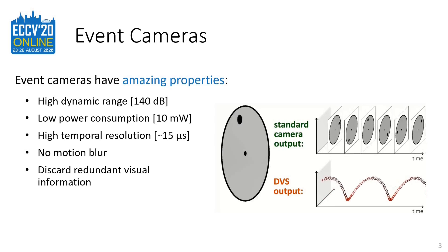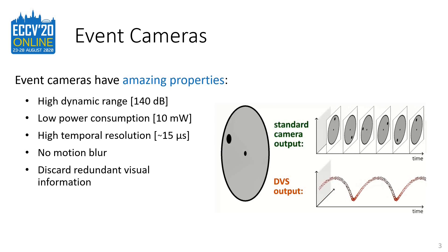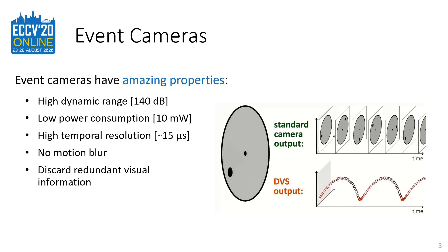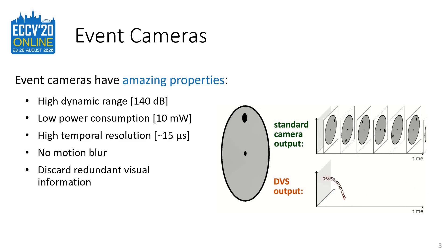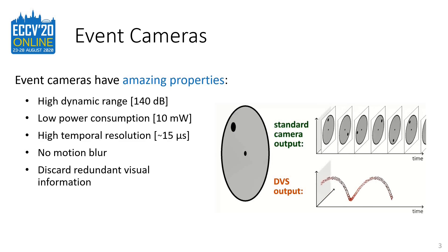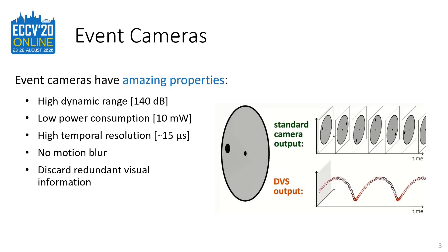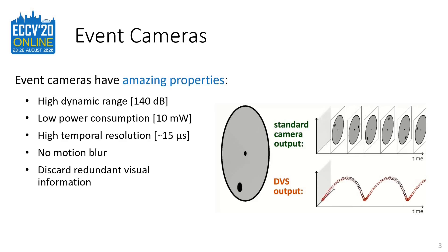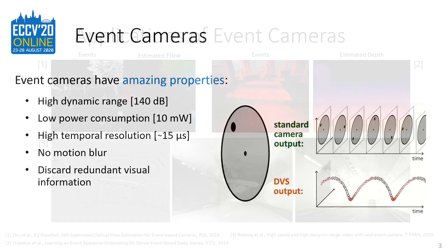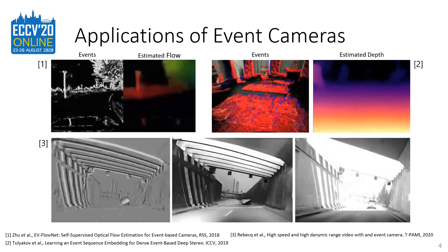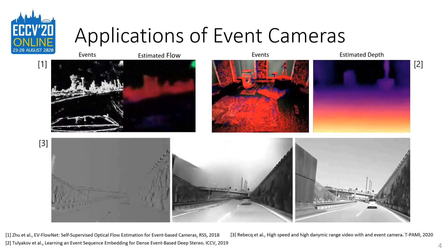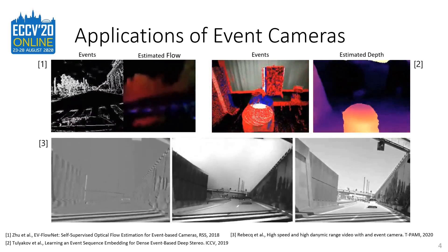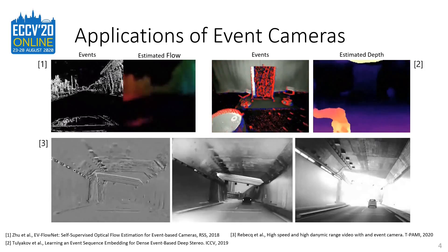Due to their operation principle, event cameras possess several amazing properties such as high dynamic range, low power consumption, and high temporal resolution. In addition, due to their high temporal resolution, event cameras do not suffer from motion blur. Event cameras have gained popularity in recent years due to their outstanding properties, especially in edge case scenarios, which include high dynamic range scenes and high speed motions.